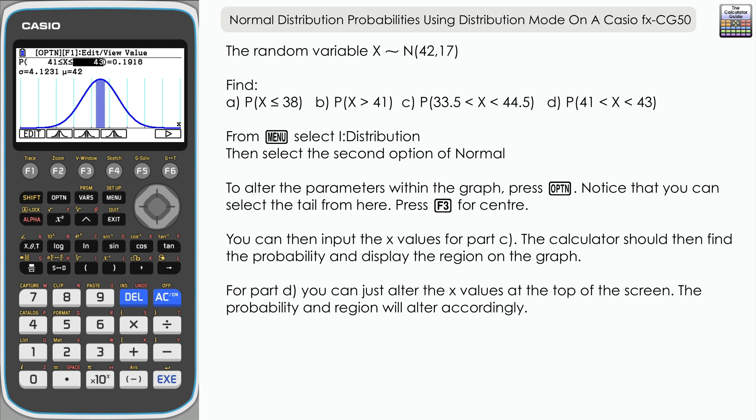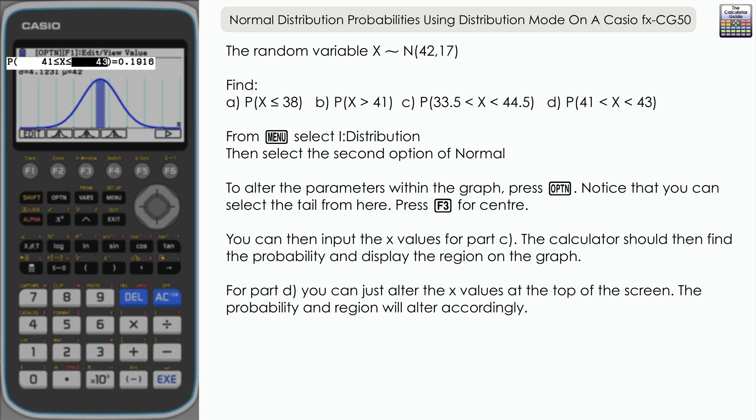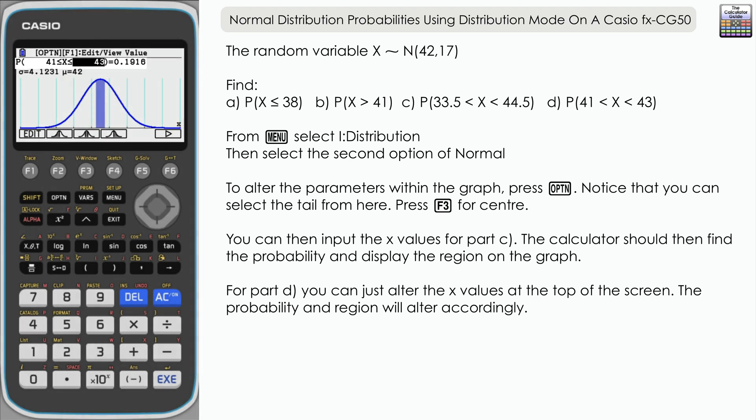So there we go—how we can find probabilities using distribution mode from the normal distribution, arguably easier to access than going through the statistics mode on the FXCG50 as previously.